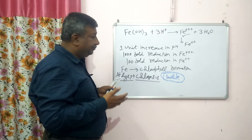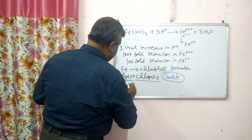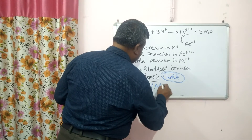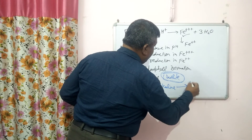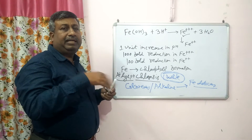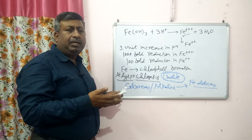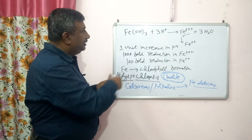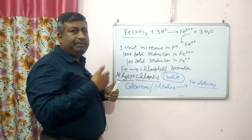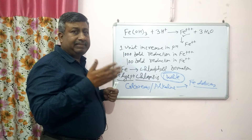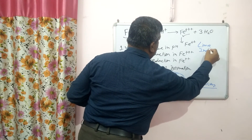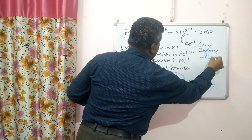Under high pH conditions, iron deficiency occurs. In calcareous soils — soils with high carbonate or bicarbonate content — the soil is alkaline, meaning pH is more than 7, and iron deficiency is very common. In calcareous or alkaline soil, iron is precipitated in hydroxide form. When we apply lime (calcium carbonate) to any soil, pH increases and iron deficiency results, showing chlorosis. That is why it is known as lime-induced chlorosis.